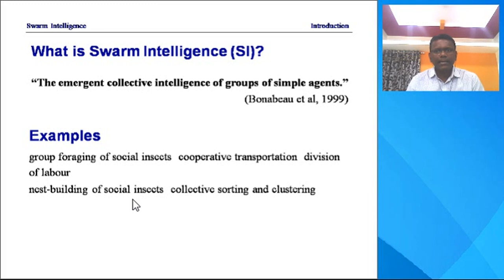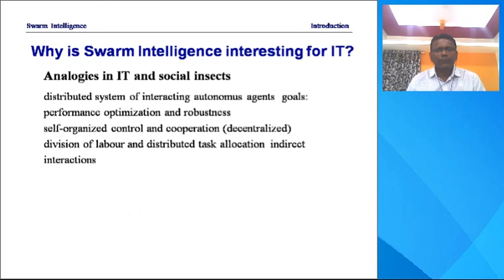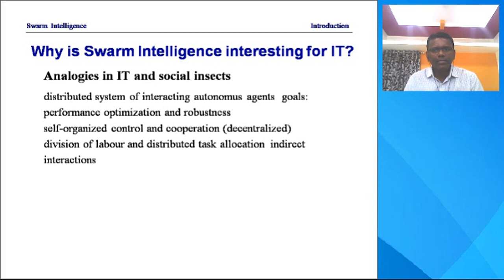Why is Swarm Intelligence interesting for the information technology world? Because of the analogy between IT and social insects: distributed systems of interacting autonomous agents, goal performance optimization, robustness, self-organizing control, and cooperation — that is decentralization, division of labor, distributed task allocation, and indirect interaction. These are some of the characteristics we observe in biological insects in nature.